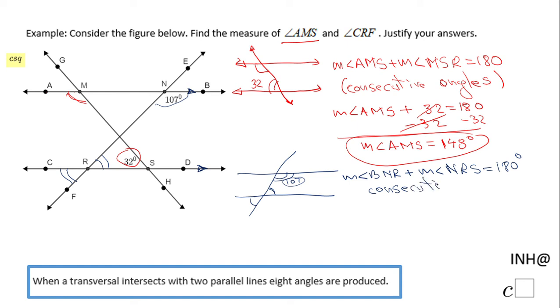Now we can find the measure of angle NRS because BNR is 107. The way we find it is by subtracting 107 from 180. So the measure of angle NRS will be 73 degrees.